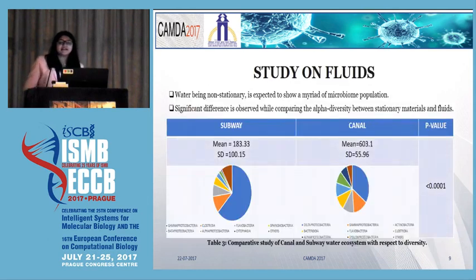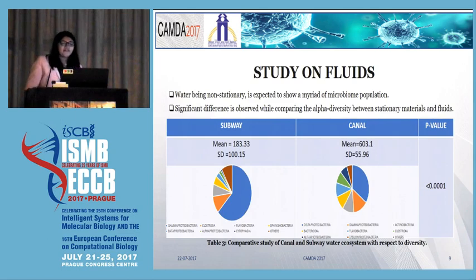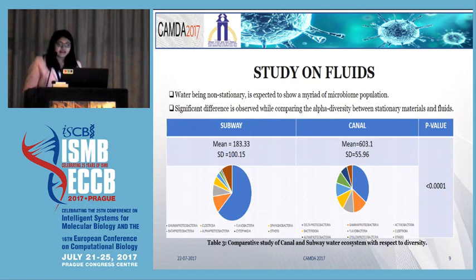We have also compared data for non-stationary material, that is fluid. The water sample from canal and subway were compared. The alpha diversity value in subway is 183.33, which is the mean for all the dataset, and 603.341 for canal datasets. This is significantly higher than that of the stationary material.